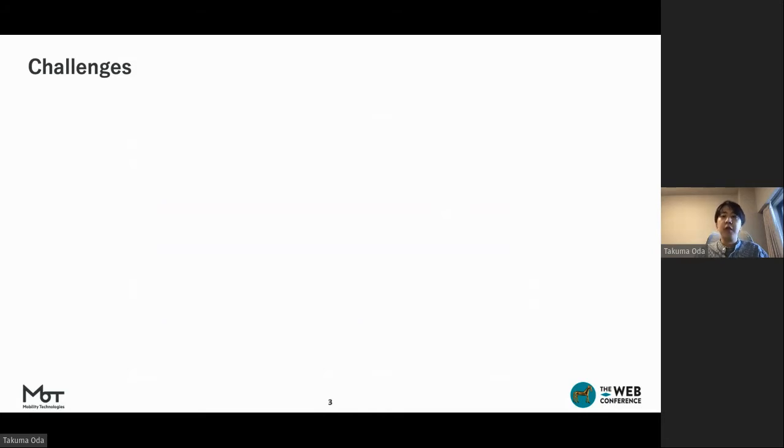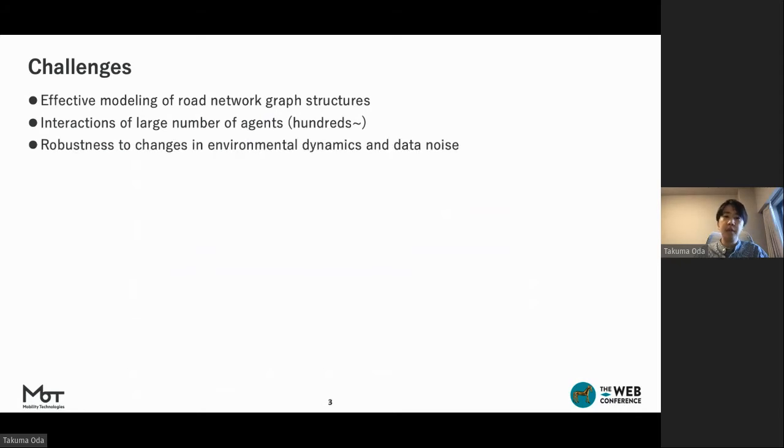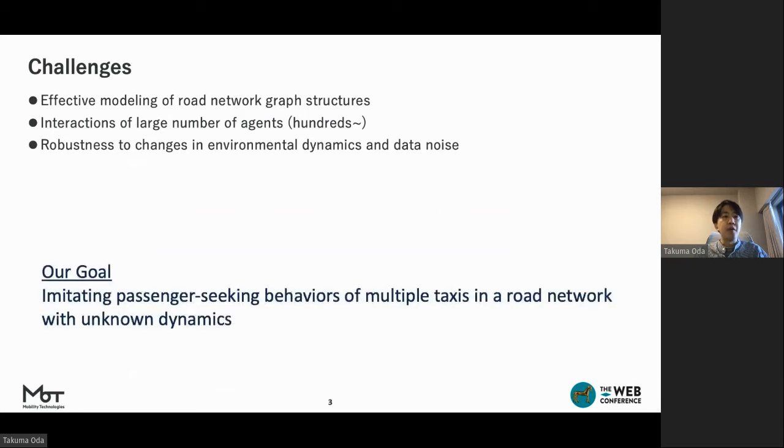To answer this question, we need to tackle some challenges. Fine-grained road network structures tend to be computationally intensive, which is often abstracted and represented as a coarse mesh. The number of vehicles to be simulated for ride-hailing services is generally relatively large, ranging from hundreds to thousands. Robustness to changes in environment dynamics and data noise is essential when you want to simulate situations that are not in the distribution of training data.